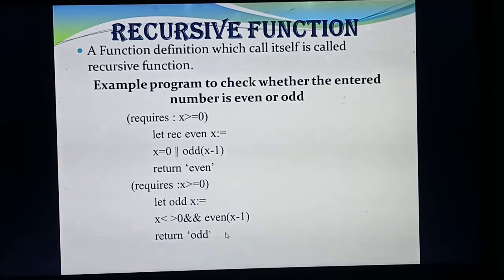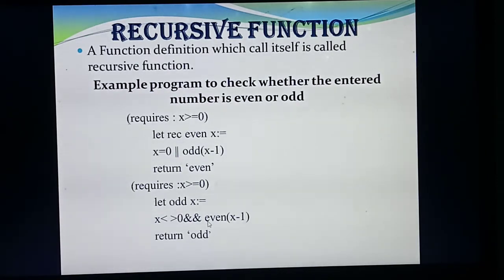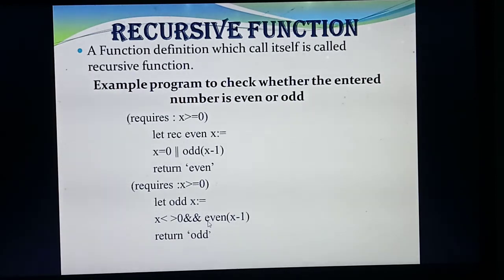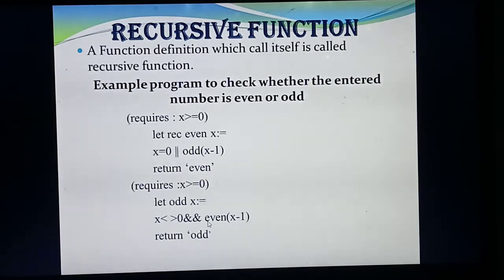So today I studied about recursive function. The function calls itself — that is why it is called recursive. This function will execute like a for loop: for example, if you give 10 numbers, it will execute till all 10 numbers and find how many are even and odd. The program structure has a precondition (`recurs`), a function definition (`let rec even x =`), and a postcondition (`return`). Understood this program?